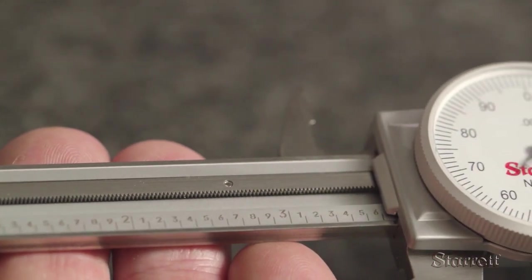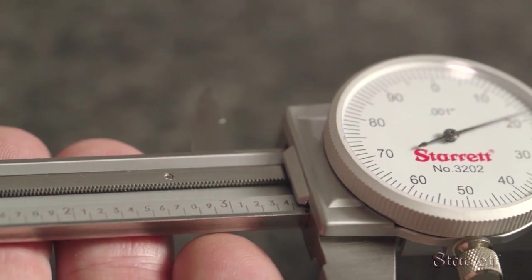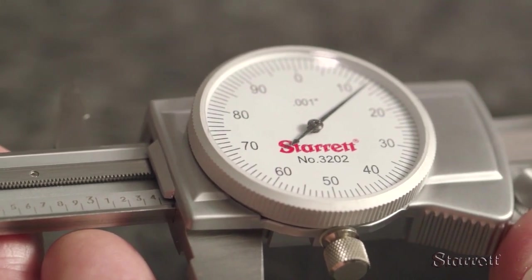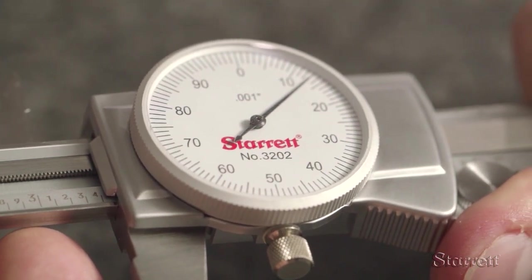Look at the bar scale. The large 3 and the smaller 4 are the last increments visible. The dial indicates 13, so the size is 3.413 inches.